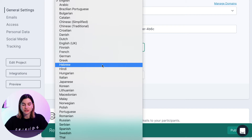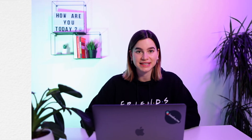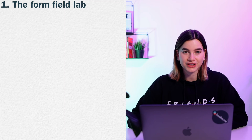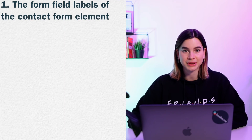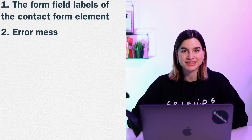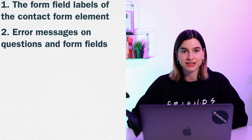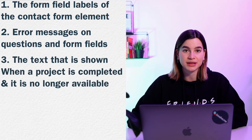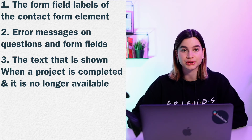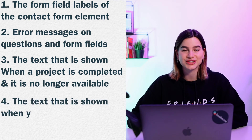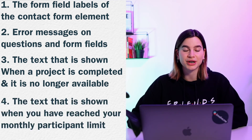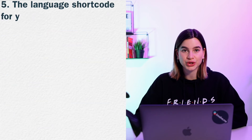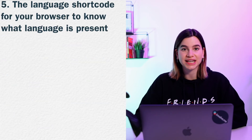The following text is translated by this setting: all the form field labels of the contact form element, error messages on questions and form fields like "this field is required," the text that is shown when a project is completed and it is no longer available, and the text that is shown when you have reached your monthly participant limit.